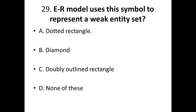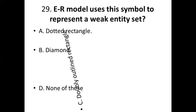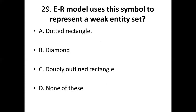Twenty-ninth bit. The ER model uses this symbol to represent a weak entity set. Option A, dotted rectangle. Option B, diamond. Option C, double outlined rectangle. Option D, none of these. Answer: Option C, double outlined rectangle.